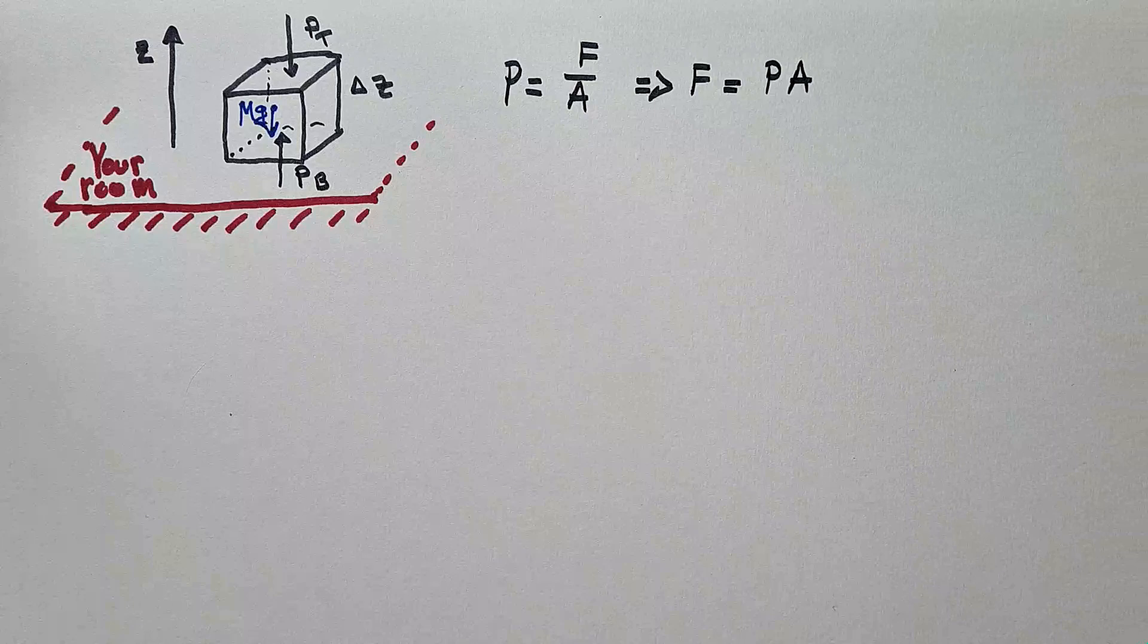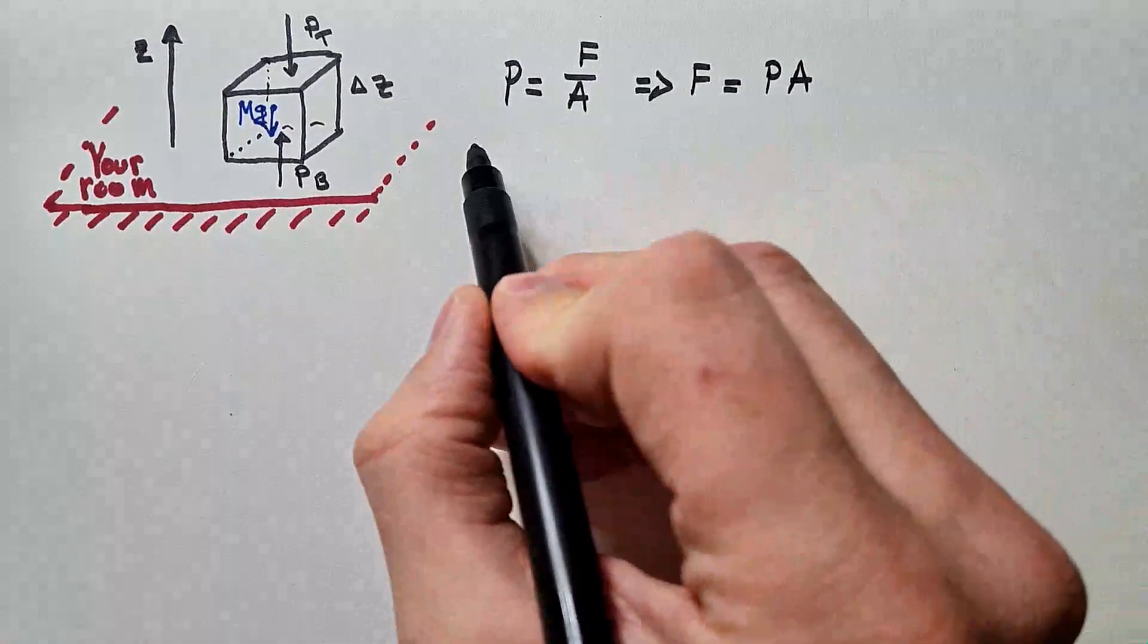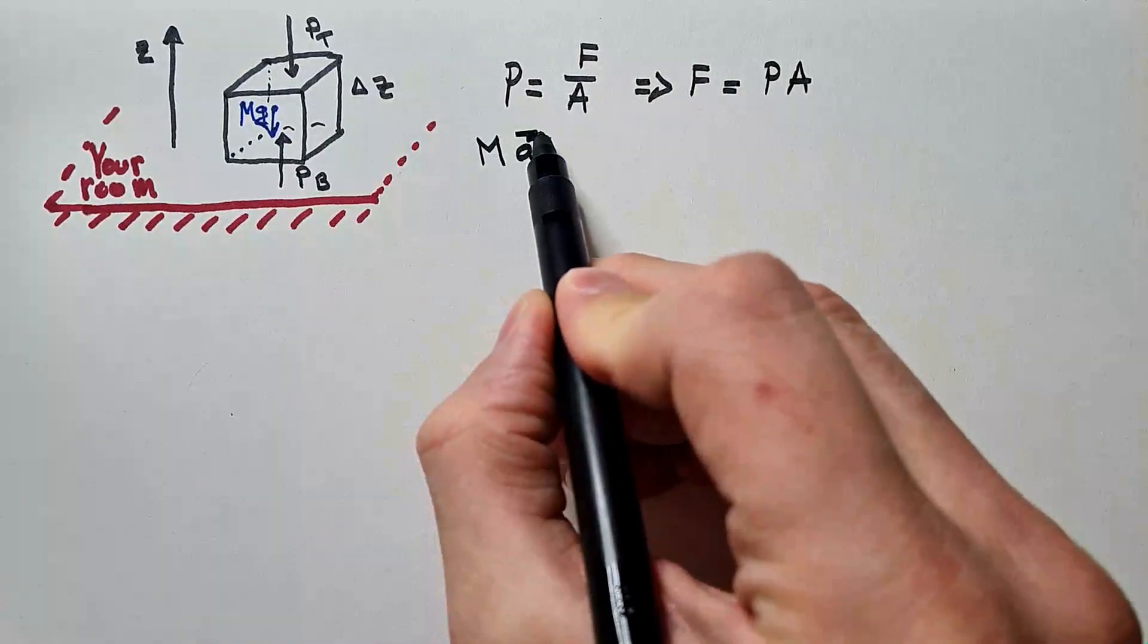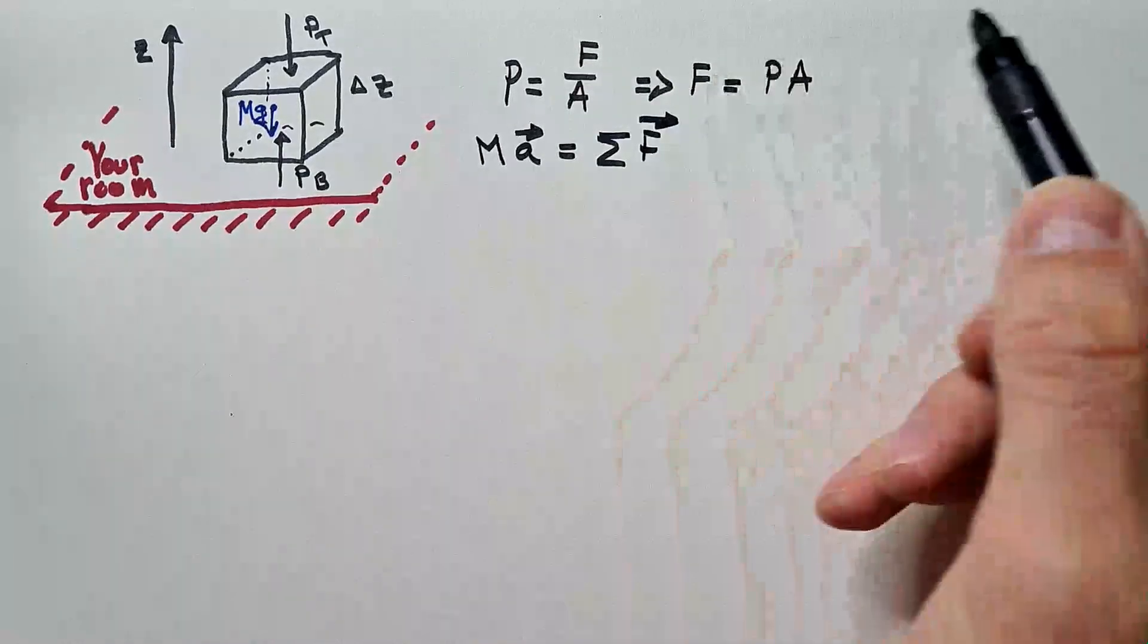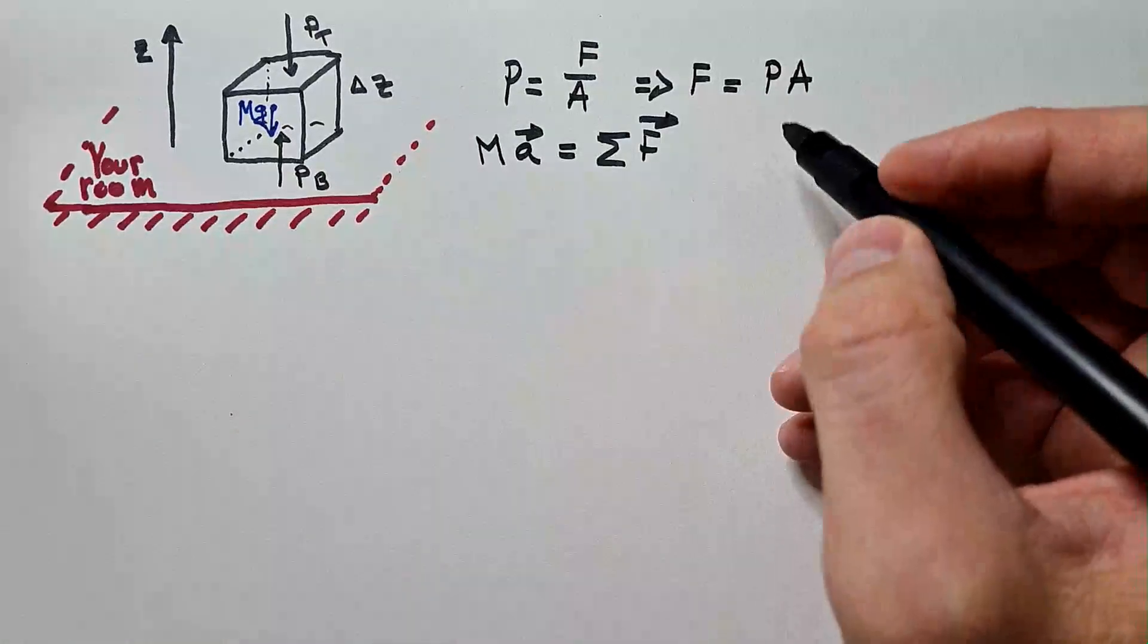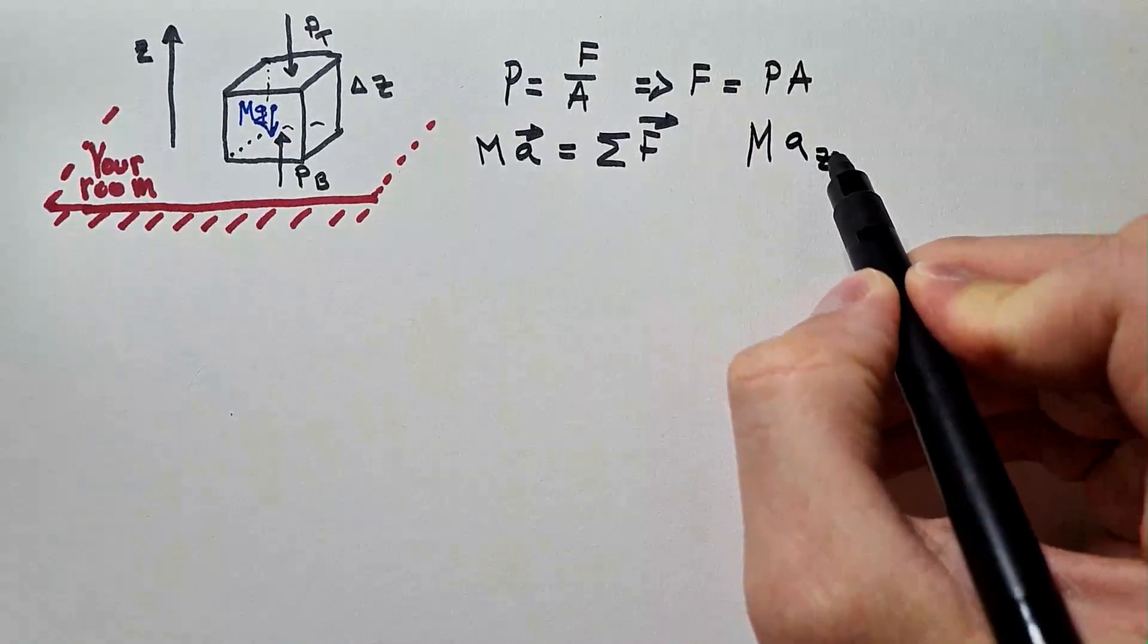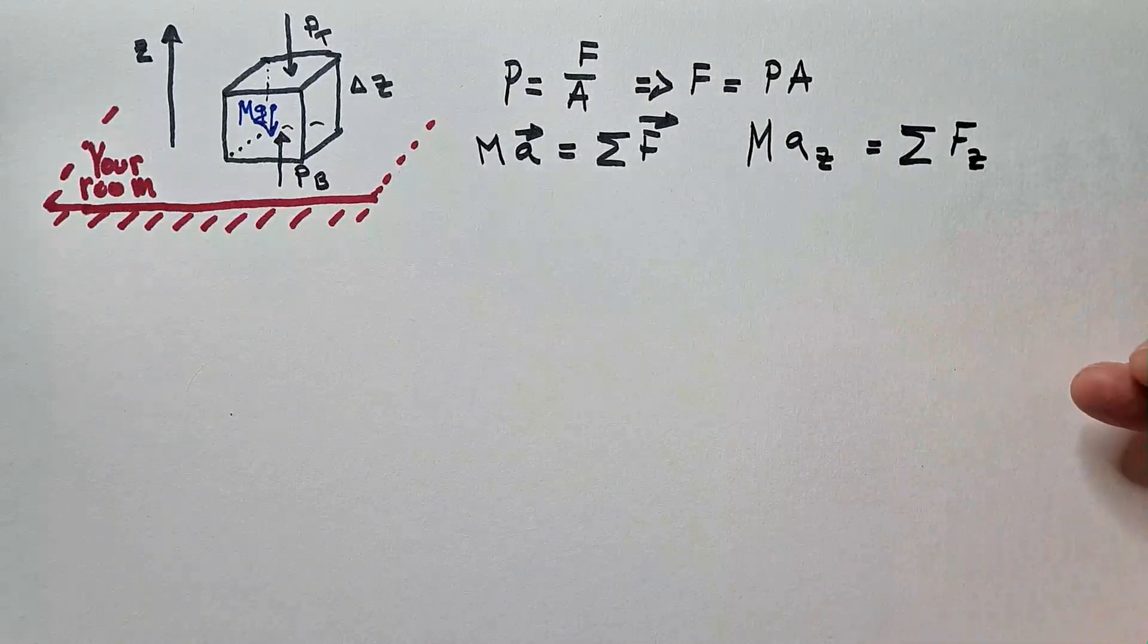To find hydrostatic equation, we need second Newton's law. That says that, applied to this box, mass of this box of air times acceleration is the sum of all forces. We will only consider forces in the z direction. So this equation is simplified to scalar equation.